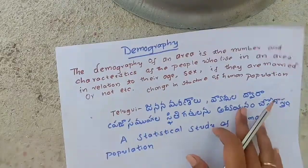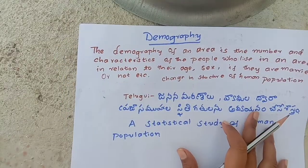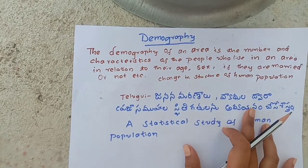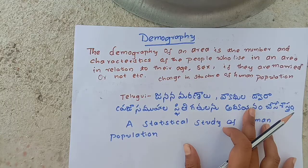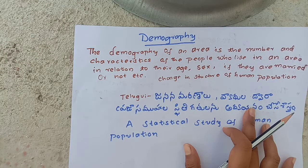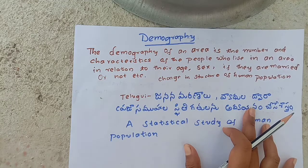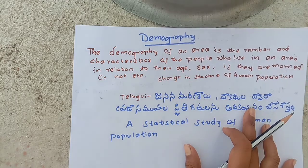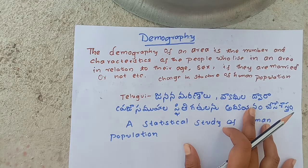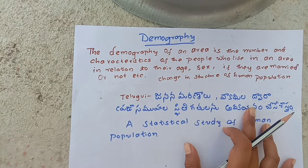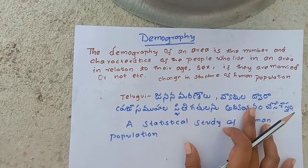Today we are going to look at what demography is. What is demography? The demography of an area is the number and characteristics of the people who live in an area, in relation to their age, sex, if they are married or not, etc.